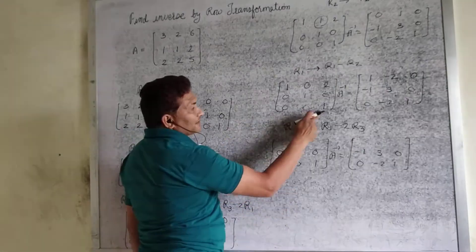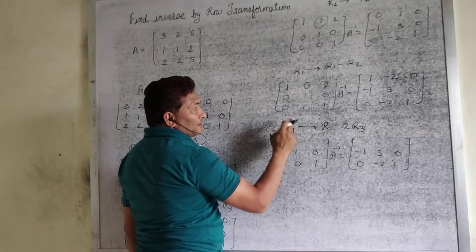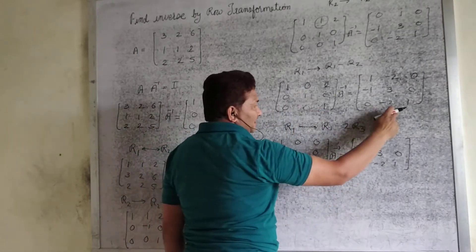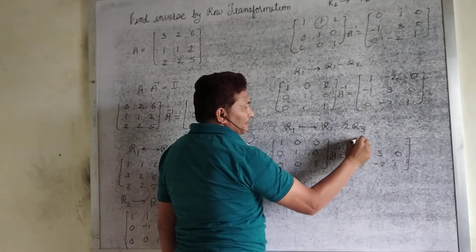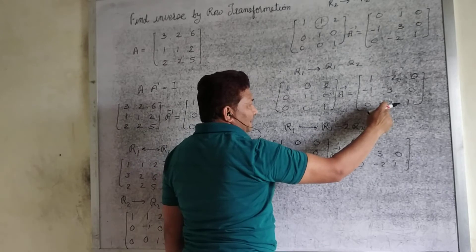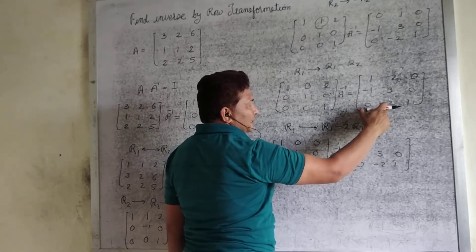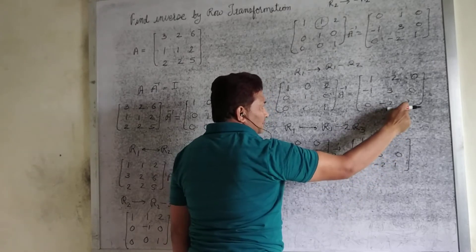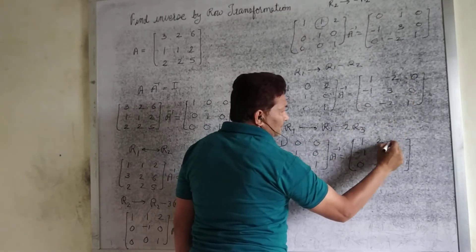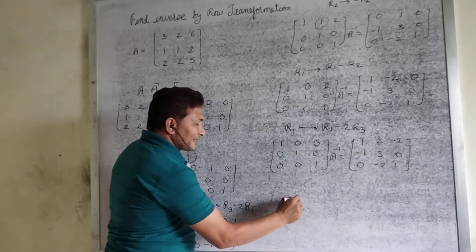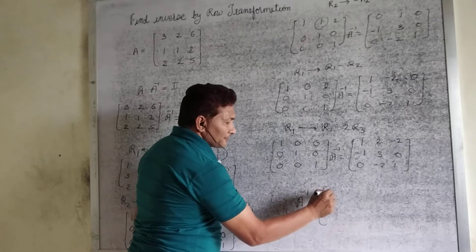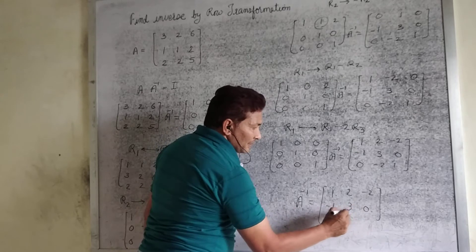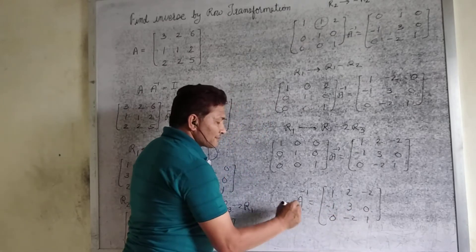Multiply the third row by 2: we get 0, 0, 2. Subtract from first row: 1-0=1, 0-0=0, 0-0=0 on the left side — giving us the identity. On the A-inverse side: 1 times 2 gives 0; 1 minus 0 = 1; multiply -2 by 2 gives -4, and -2 plus 4 = 2; multiply 1 by 2 gives 2, and 0-2 = -2. So we get the inverse. A-inverse equals: row 1 = 1, 2, -2; row 2 = -1, 3, 0; row 3 = 0, -2, 1.